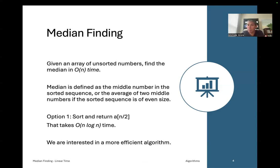The median is defined as the middle number in the sorted sequence. The given array is not sorted, but if it were, we would simply return the middle number. If the array is of even size, we take the average of the two middle numbers. The simple option is just to sort it and return the middle element, but sorting takes O(n log n) time. We're interested in a more efficient, linear time algorithm.